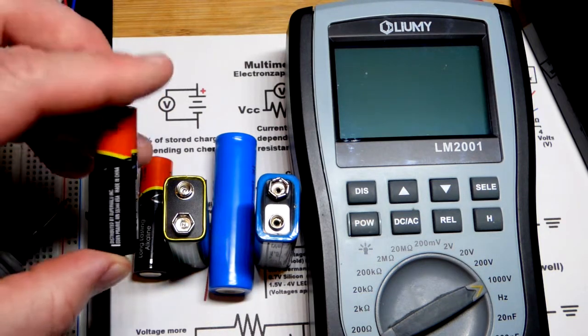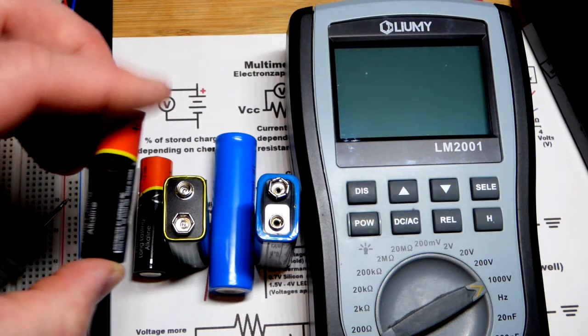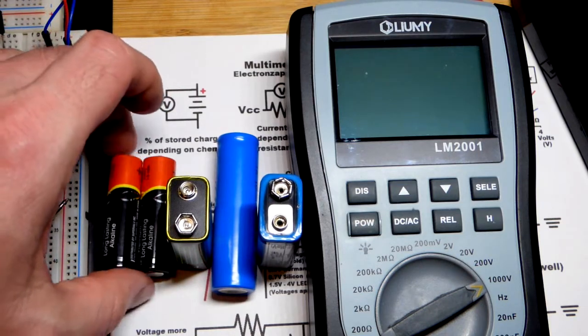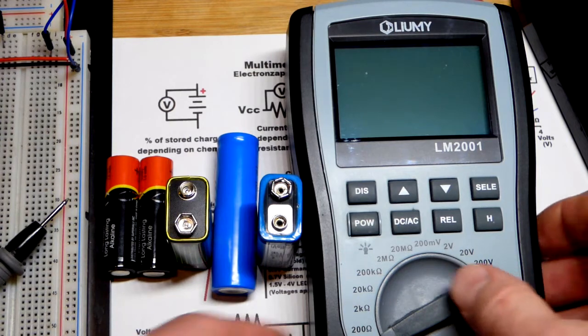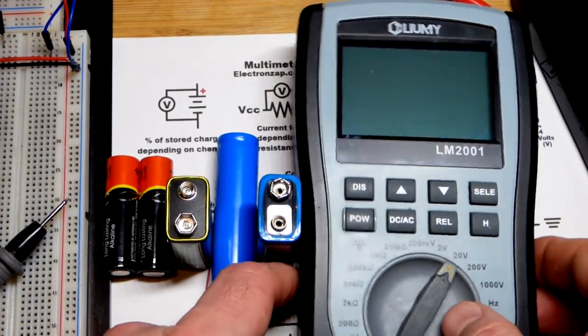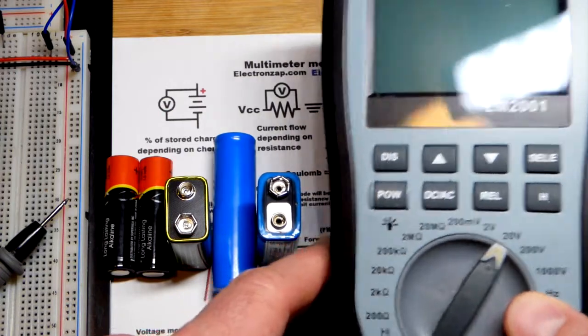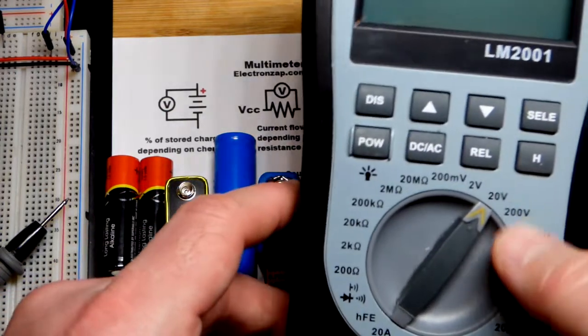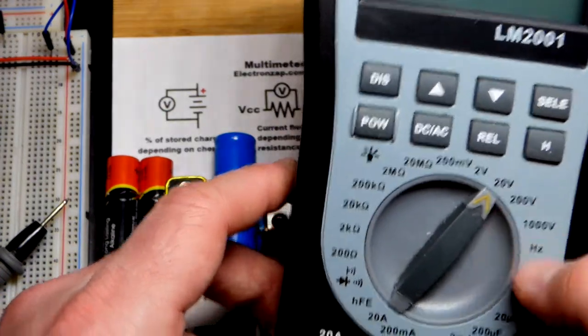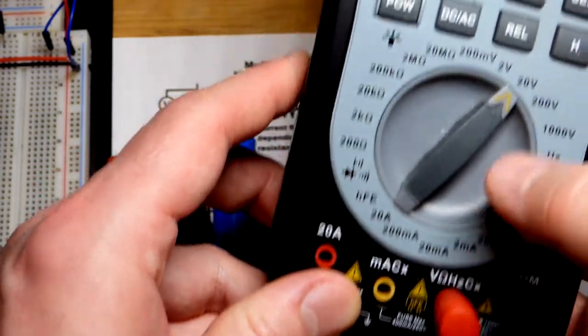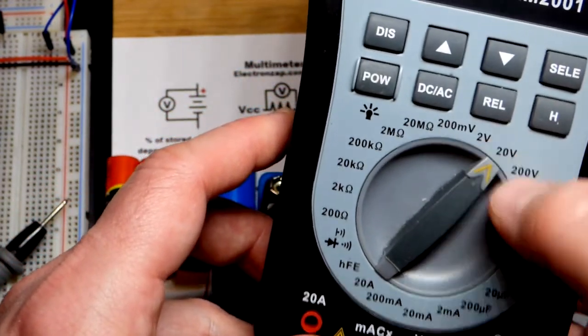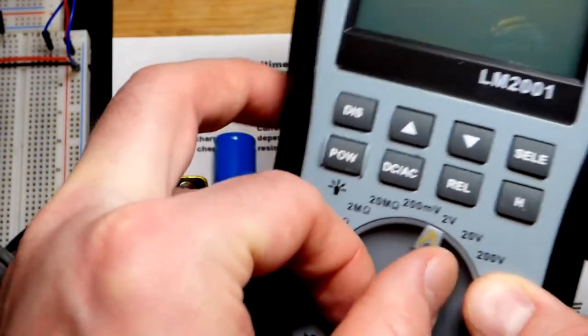These are known as 1.5 volt cells. When they're fully charged they are actually 1.6 volts usually. We're going to set the meter to measure 20 volts or less because this is a nine volt battery. If you want to get as accurate as possible you would go to two volts, and we'll start with that one.